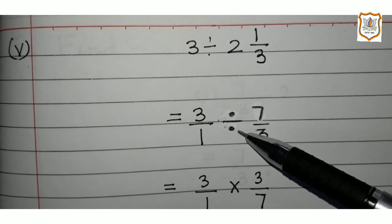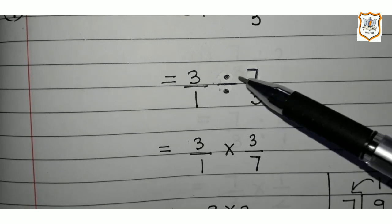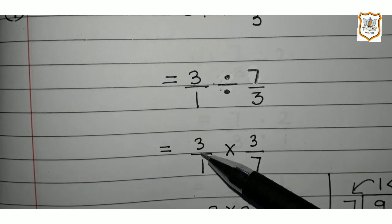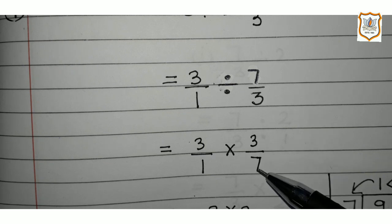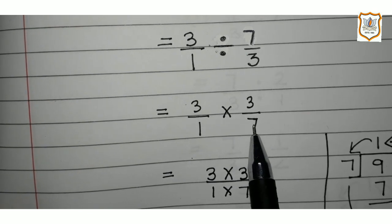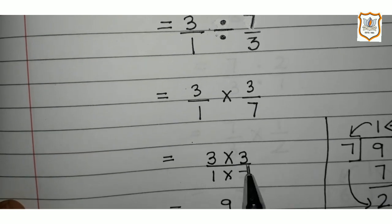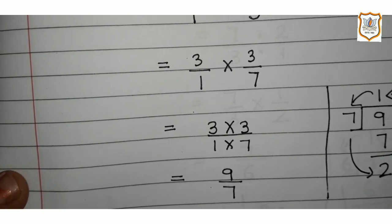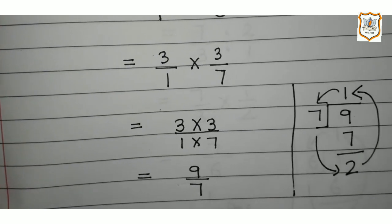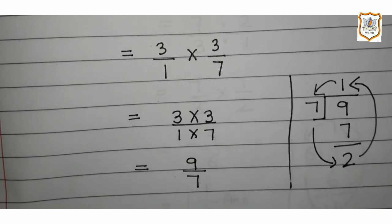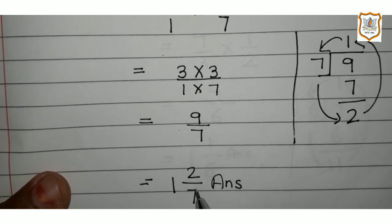This division sign will be converted into multiplication sign and the reciprocal of 7 upon 3 is taken. The reciprocal of 7 upon 3 is 3 upon 7. So, 3 upon 1 multiplied by 3 upon 7. According to the formula, numerator is multiplied by numerator: 3 into 3 upon 1 into 7. 3 threes are 9 and 1 sevens are 7. Again, this is an improper fraction. We will convert this improper fraction into a mixed fraction — we will divide 9 by 7 and our mixed fraction will be 1 integer 2 upon 7. This is the answer of part 5 of question number 1.